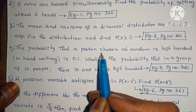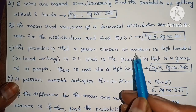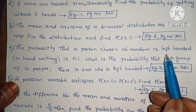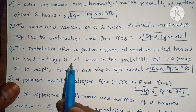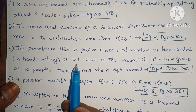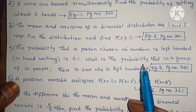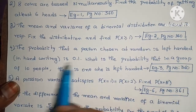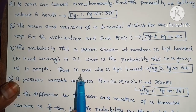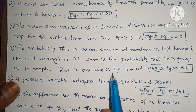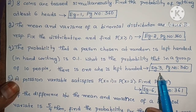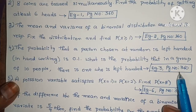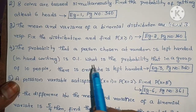The probability that a person chosen at random is left-handed in handwriting is 0.1. What is the probability that in a group of 10 people, there is one who is left-handed? Example 3, page number 360.